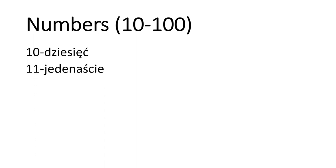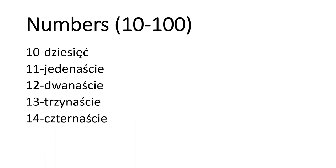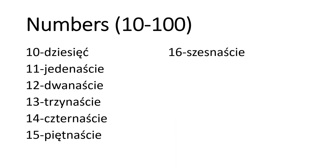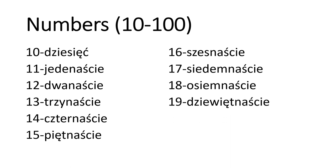Let's start with 11, 12, 13, 14, 15, 16, 17, 18, 19. When we're talking from 11 to 19 we always add '-naście' at the end — think of it like the '-teen' in English, like 17, 18. We keep the first part of the word the same as the base number, for example 11, 12, 13. It's kind of simple and it really makes sense.